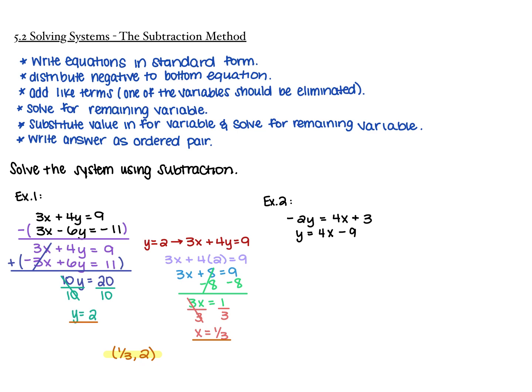So 5.2, part 2 — you are solving systems using the subtraction method. The steps are: write the equations in standard form first, distribute the negative into the bottom equation, then add like terms. One of the variables should be eliminated at that time. Solve for the remaining variable, then substitute that value into one of the original equations and solve for the other variable. Write your answer as an ordered pair.